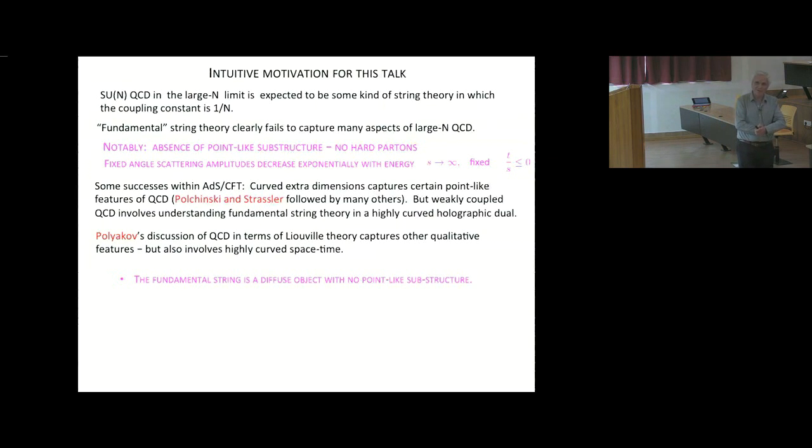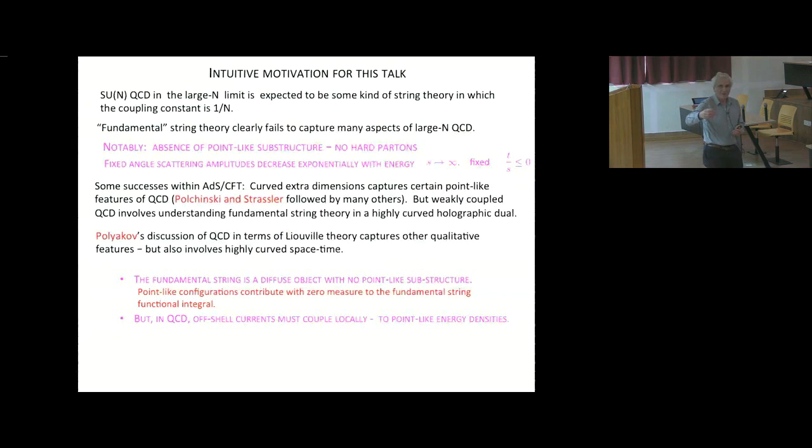It starts from the observation that the fundamental string is a diffuse object with no point-like substructure. That means that when one calculates scattering amplitudes and does the functional integral, the set of configurations of the string in which a finite fraction of the energy density of the energy moves through a point is negligible. So what we would like to do is re-weight the functional integral in some sense so that there are point-like energy densities. Such energy densities are not only needed in order to understand the fixed-angle cross-sections at high energies, but also another important aspect of QCD is that, unlike the fundamental string, it's crucial in QCD that QCD couples to external currents, electromagnetic weak and energy momentum tensor of gravity. Those currents couple locally. So in order to couple currents locally, one needs to have a formulation in which there are point-like energy densities to which the currents can couple.